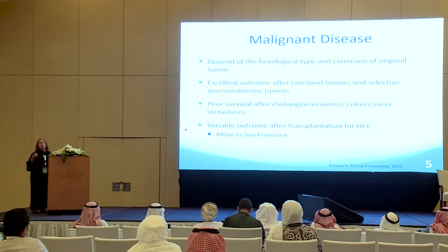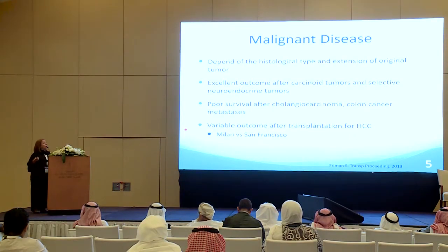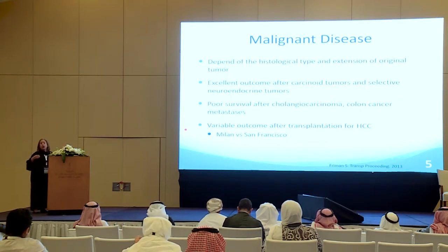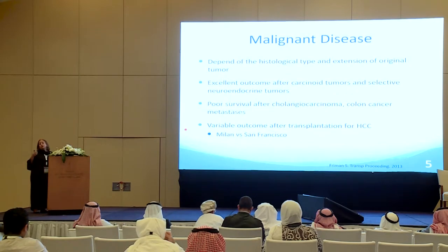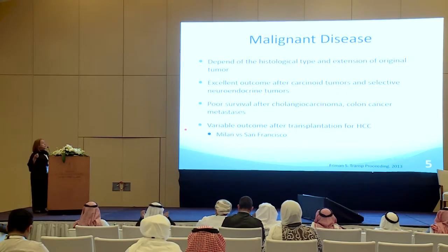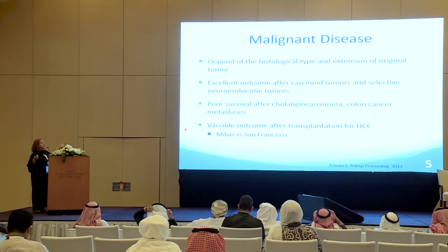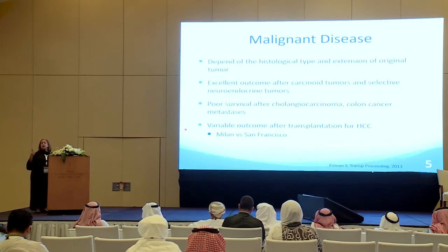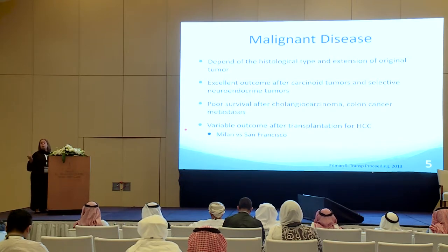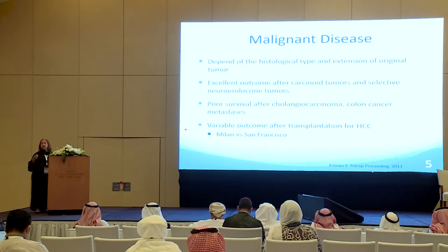The prognosis and recurrence of malignancy depends on the histological type and extension of the original tumor. There are excellent outcomes after carcinoid tumors and selective neuroendocrine tumors — these don't recur most of the time, even when very large. But there is poor survival after cholangiocarcinoma and colon cancer metastasis. Cholangiocarcinoma is lethal most of the time, and only a few centers in the world will do liver transplant for this disease given the bad outcome.